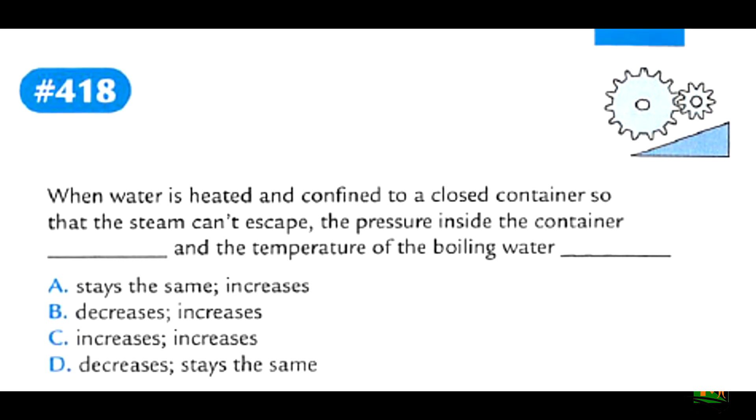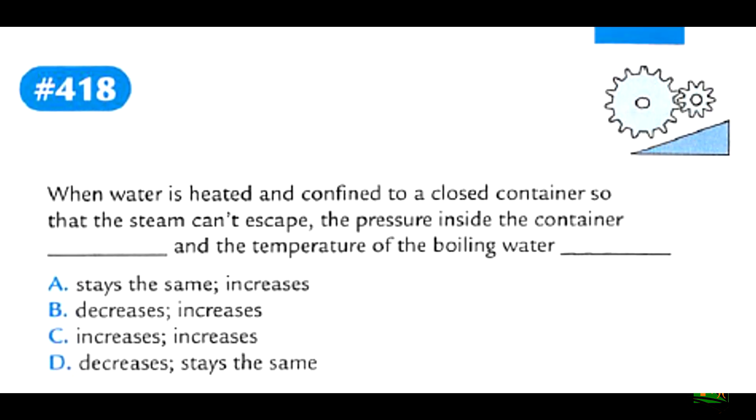If the container is closed, you can weed out any answer that says decrease for the pressure inside the container because there's no way for the pressure to escape. So option B and option D are out of the equation. Now you have option A and option C. If the pressure is inside the container and it is closed, the pressure will increase because there's no way for the pressure to escape. And the temperature of the boiling water will also increase. Weeding out option A, the option will be C, both of them will increase.